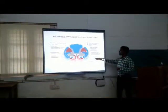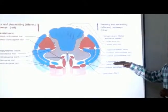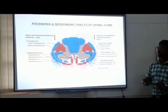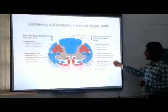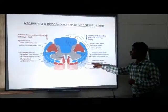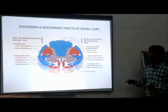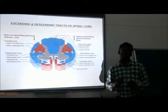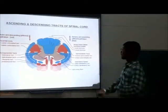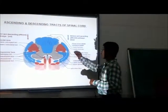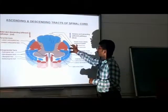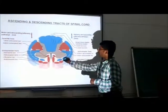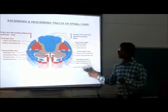The third one is the anterolateral system, which is divided into the lateral spinothalamic tract and the anterior spinothalamic tract. This is the lateral spinothalamic tract and this is the anterior spinothalamic tract.